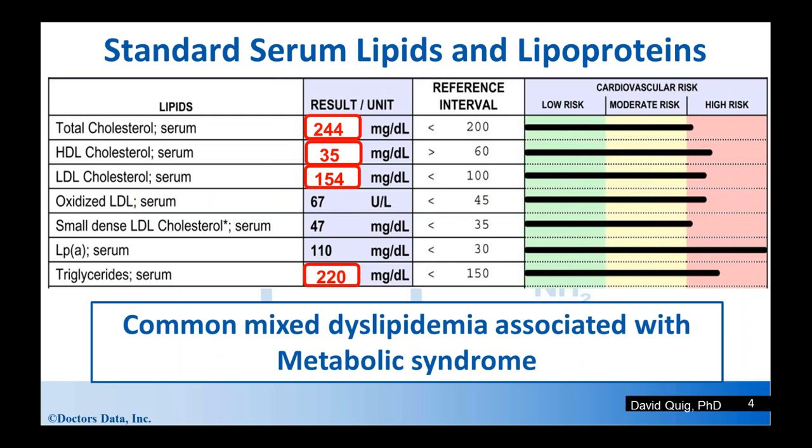We start with standard lipids and lipoproteins. Her total cholesterol was very elevated, her HDL cholesterol was dismally low, her LDL cholesterol was markedly elevated, and importantly she had hypertriglyceridemia — this is a fasted specimen. This presents the common mixed dyslipidemia associated with metabolic syndrome. One thing I'm going to point out heavily is the regulation of LDL and HDL metabolism initiated by an expanded triglyceride pool.